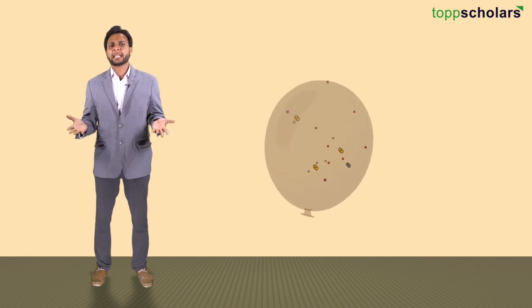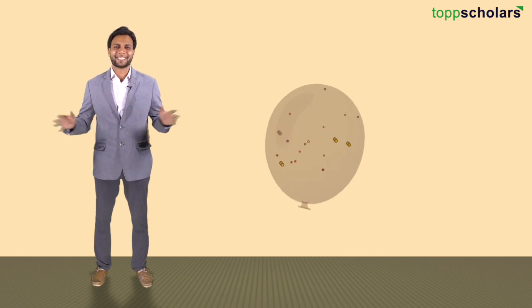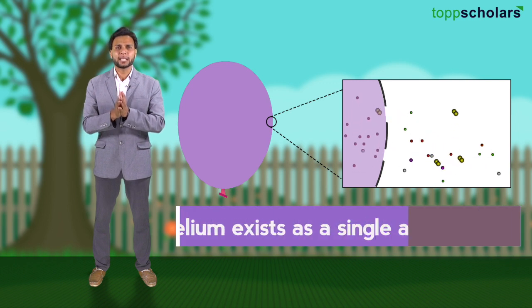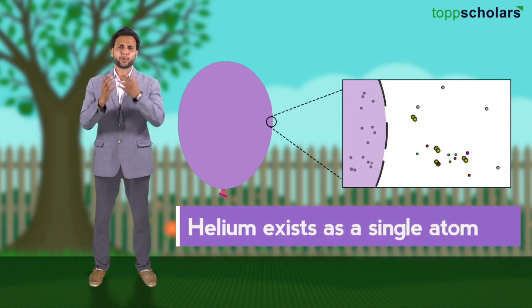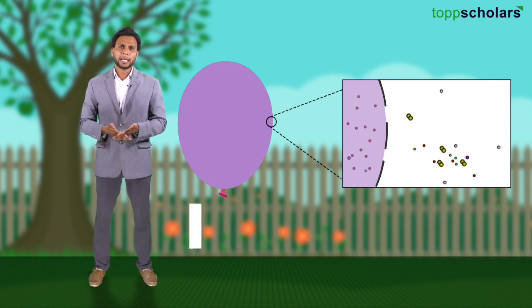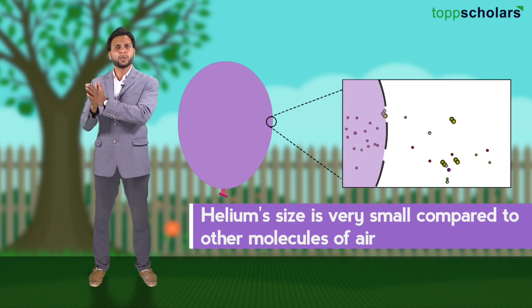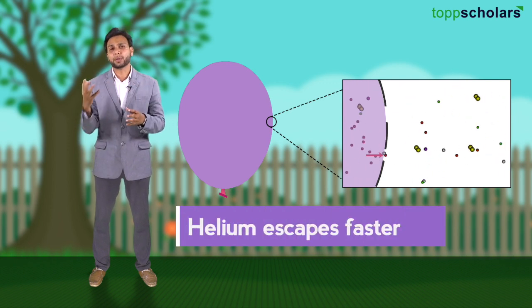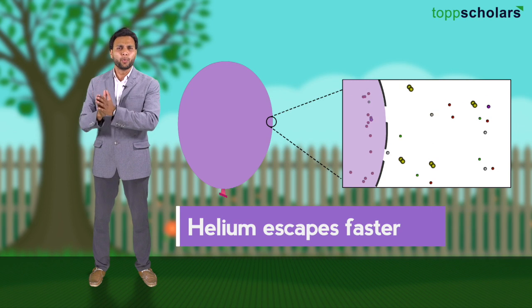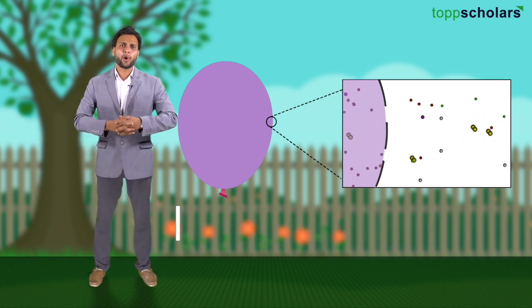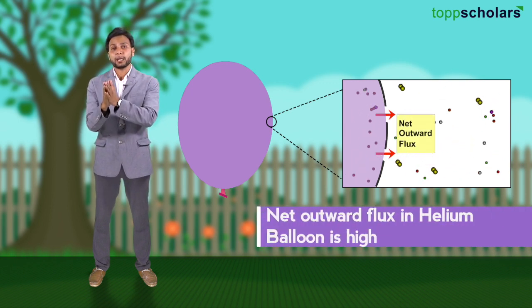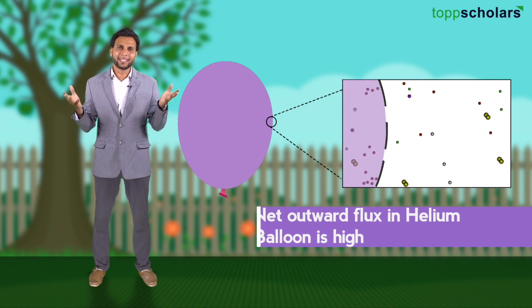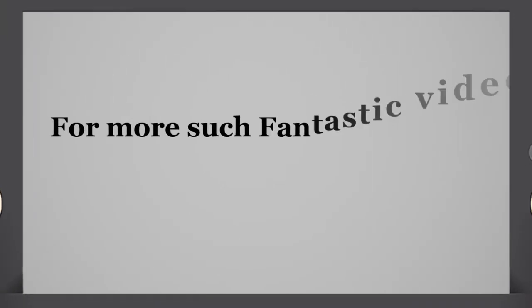The air has the force to shrink the balloon in addition to the atmospheric pressure, and hence the balloon slowly and steadily deflates. Helium balloons deflate faster, and there is a specific reason behind it. Helium exists as a single atom, unlike other molecules which have two or more atoms. Also, helium's size is very small in comparison to other molecules of air, and that is why helium moves very rapidly from inside to outside. Therefore, the net outward flux in a helium balloon is way higher than in a balloon filled with air.